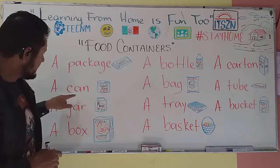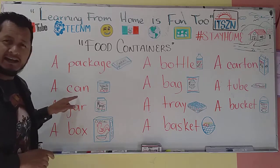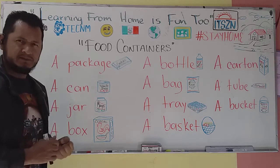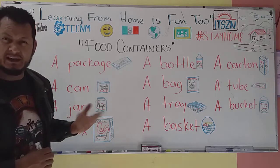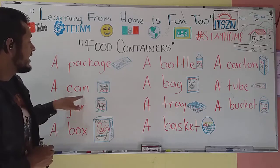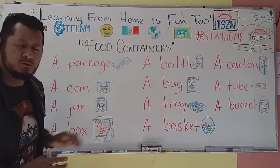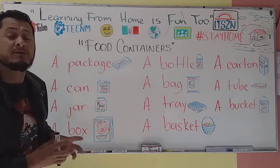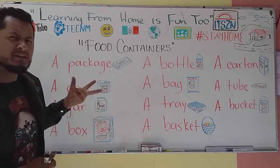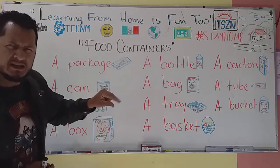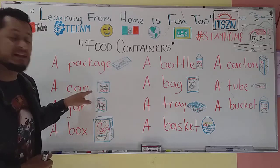A can. A can se escribe igual que el término auxiliar «poder». A can is made of metal — es hecho de metal, normalmente fierro o aluminio. A can es una lata. Podemos encontrar diferentes productos en un can — normalmente son líquidos, un poquito espesos o más líquidos, depende. Pero es hecho de metal.